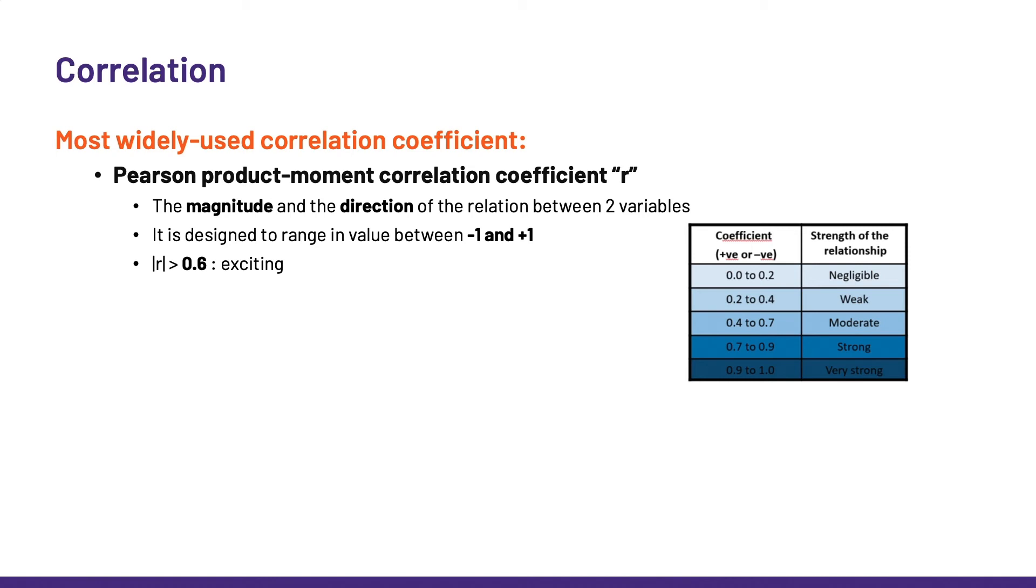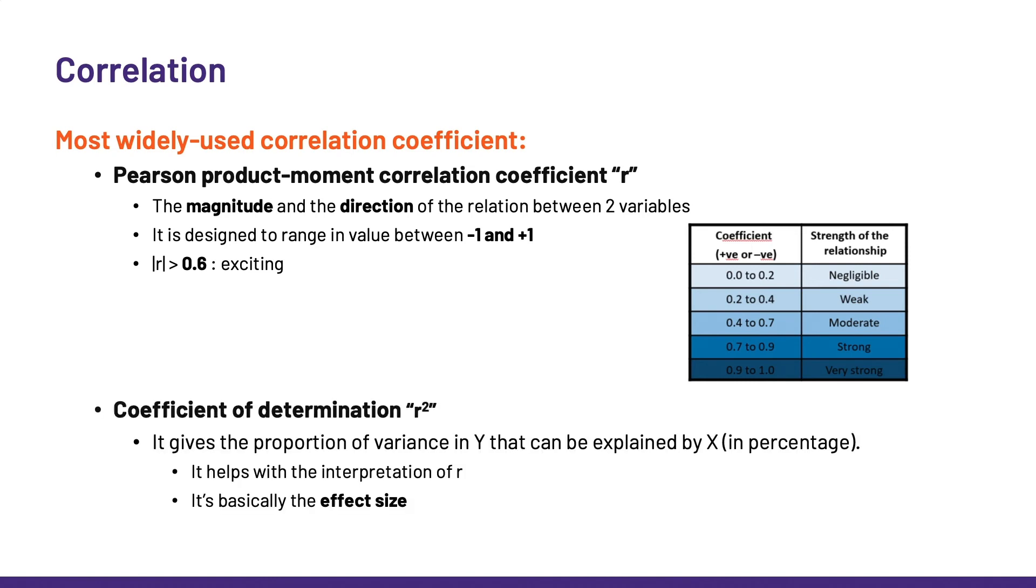Now, there is also the coefficient of determination r-squared, which is really cool. It gives the proportion of variance in y that can be explained by x, often in percentage. So, it helps big time with the interpretation of r, and it's basically the effect size. And it is about not being misled by a p-value, which we should never trust on its own. Let me show you.